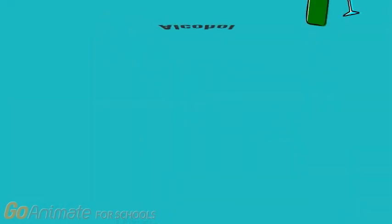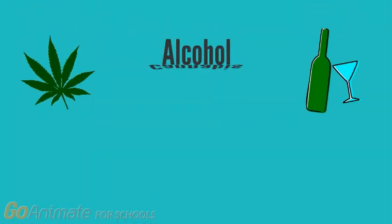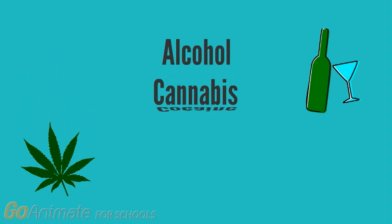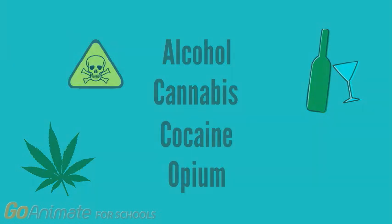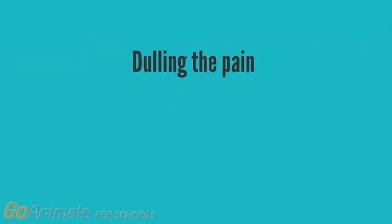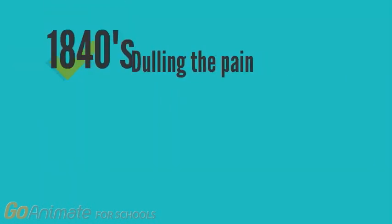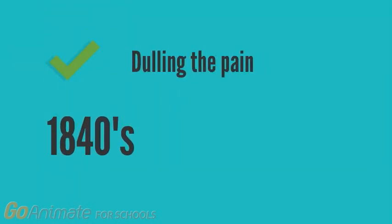At this time, substances like alcohol, cannabis, cocaine, and opium were used as anesthetics, often in unsafe doses. Although this was successful at dulling the pain, it wasn't until the mid-1840s that a major breakthrough was made in the world of anesthetics.